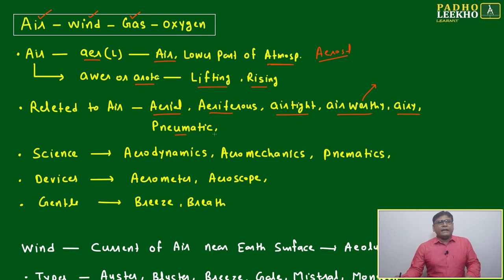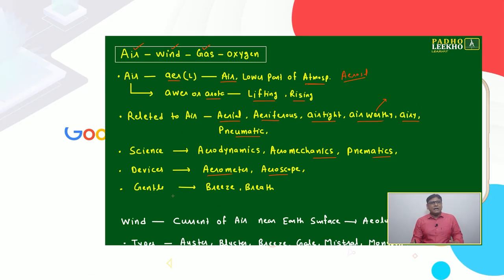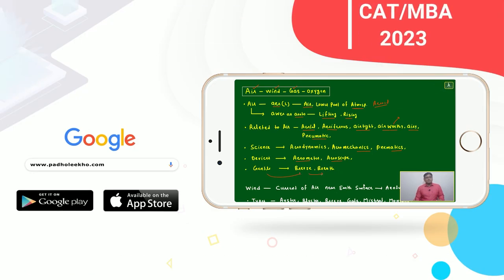After that, airy, pneumatic—also related to air. Sciences: aerodynamics, aeromechanics, pneumatics. Devices: aerometer, aeroscope. If it is gentle air, we can say it is breath.